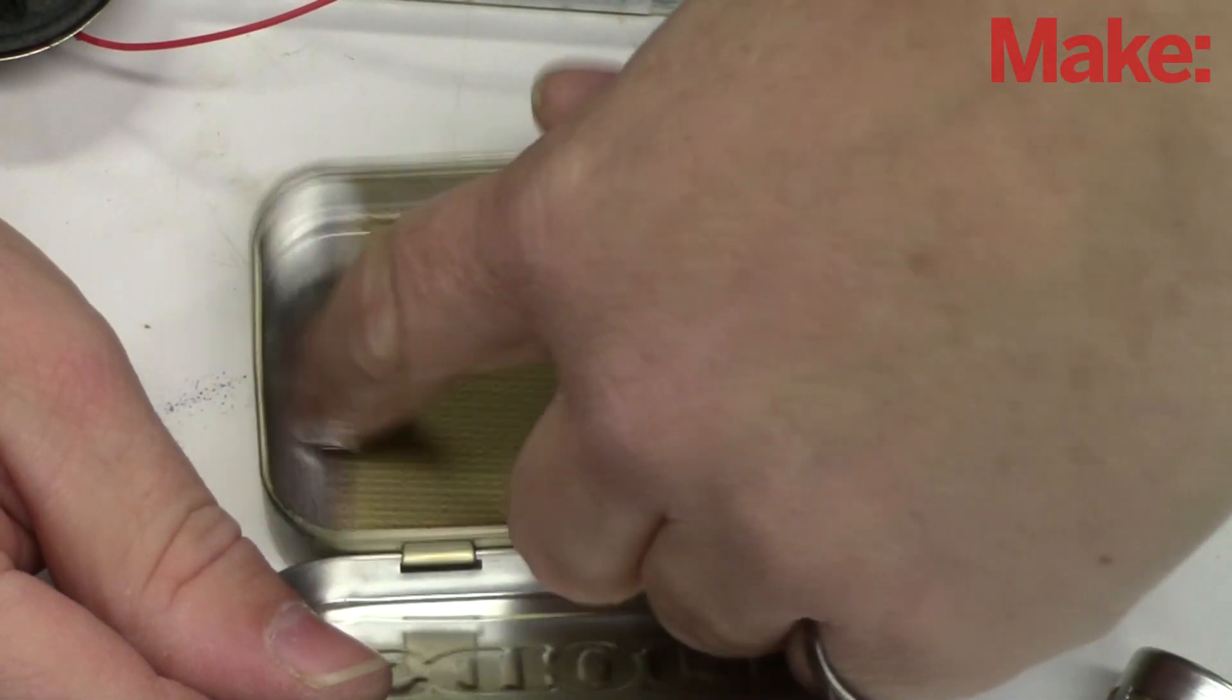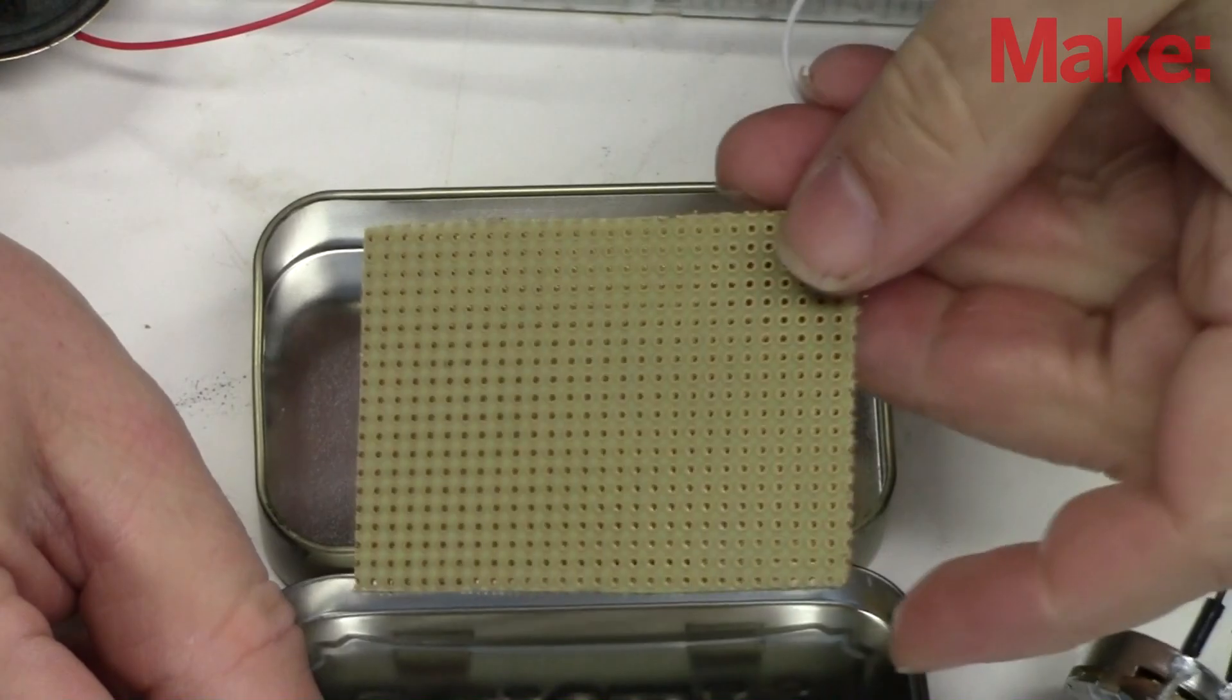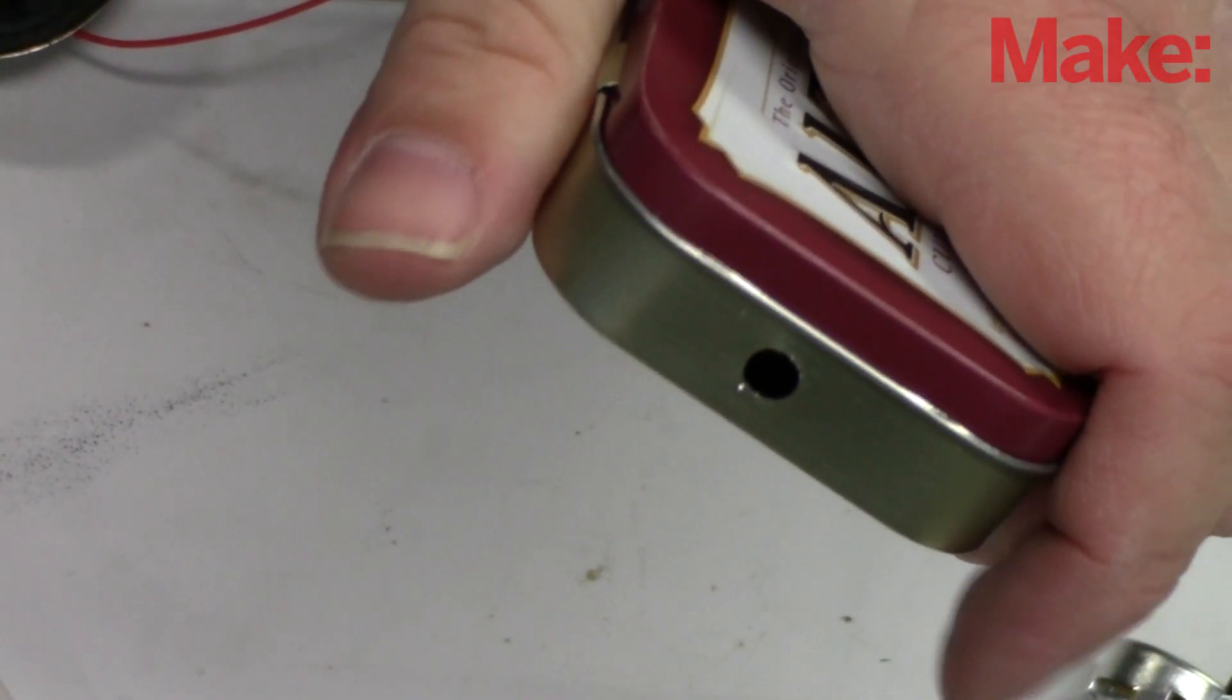I cut a piece of perfboard to fit the box. It'll actually cut down even smaller because the circuit isn't all that large. I then start drilling different holes to mount different connectors into my box.